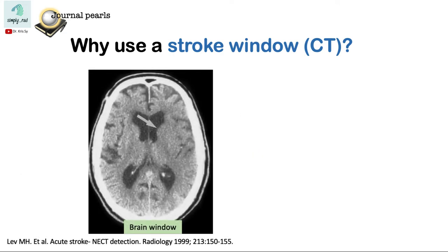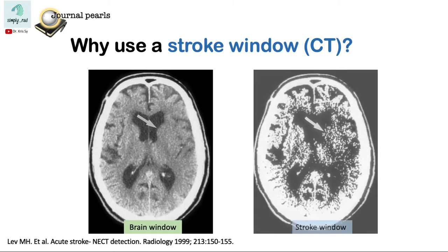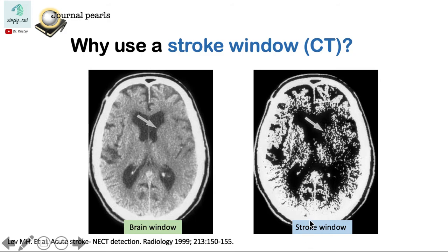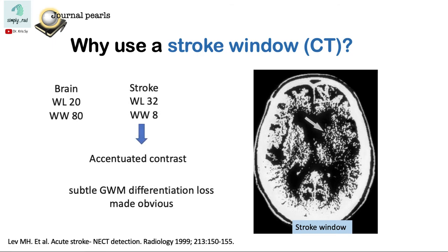So why use a stroke window? This is the brain window — the left caudate here appears normal. But when we adjust to a stroke window, there is now a much more obvious change in contrast. We note that there is a hypodense left caudate head compared to the contralateral side, as well as hypodensity in the operculum. A stroke window has a much more narrow window width, resulting in accentuated contrast, so subtle gray-white matter differentiation losses are now made more obvious.